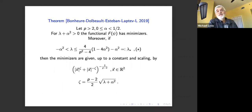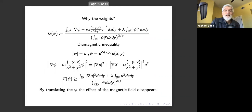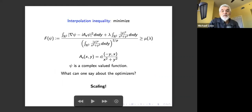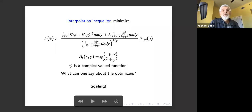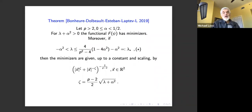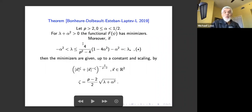Here is a theorem by Bonheure, Jean Dolbeault, Maria Esteban, and myself. The functional has three parameters: p > 2, α ∈ (0, 1/2), and λ. Depending on these parameters, you have symmetry or not. Define λ* = (1 − 4α²) − α² (roughly). When −α² < λ ≤ λ*, an optimizer exists and the minimizers are given, up to constant scaling, by a specific explicit function depending on ζ.